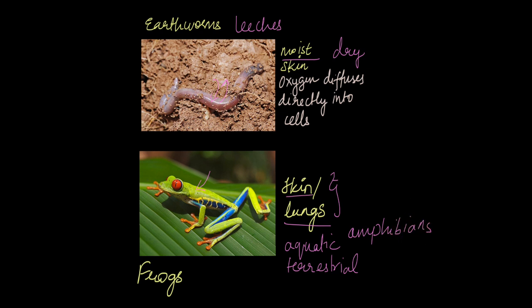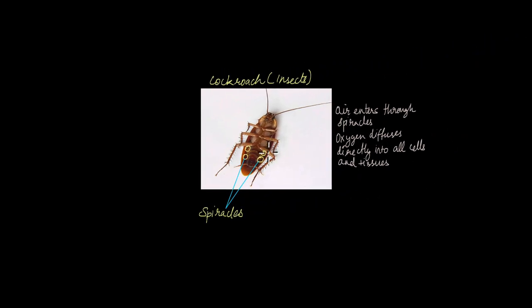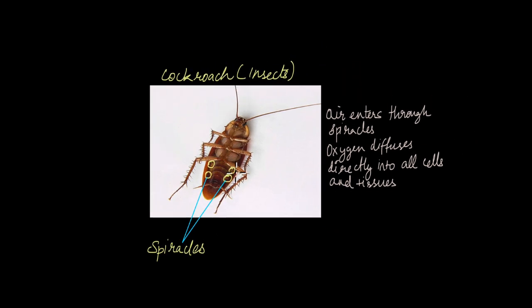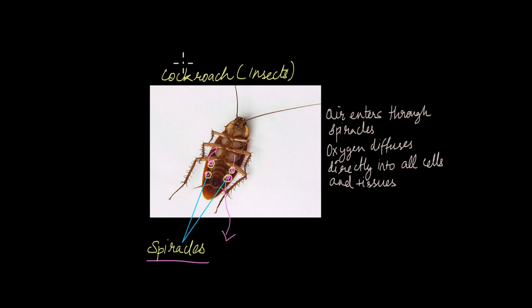Continuing with land animals, there are still animals that don't have lungs. Cockroaches, grasshoppers, and other insects don't have lungs — instead, they have specialized tubes running through their body known as spiracles. The spiracles have tiny entry-point openings on the underside of their surface through which air enters the body. Once air has entered, oxygen diffuses directly into the cells and tissues, and carbon dioxide produced diffuses back out through the spiracles. Spiracles are seen in insects like cockroaches, grasshoppers, and mosquitoes.